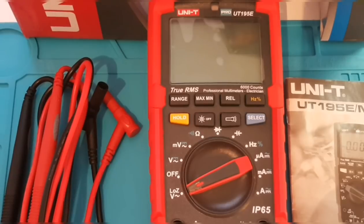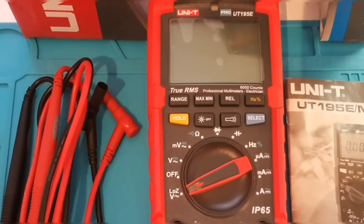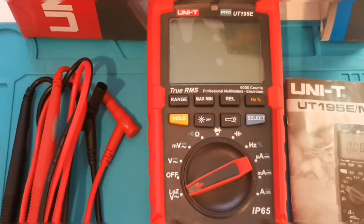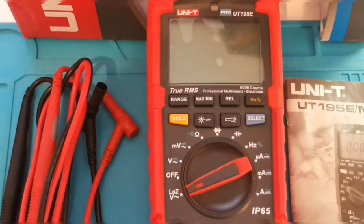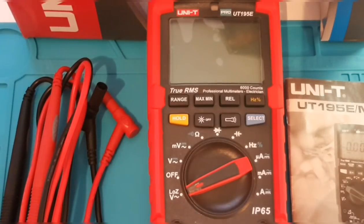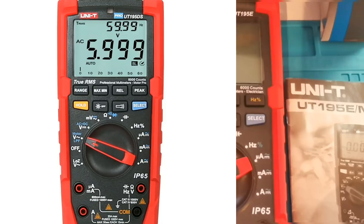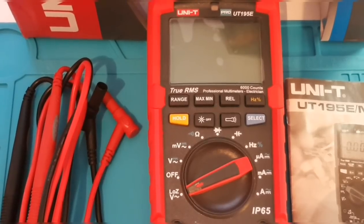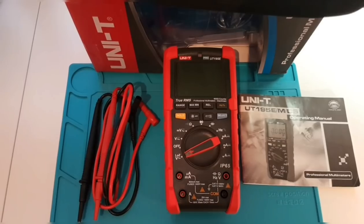There are three different varieties of the UT195 series. There's the UT195E, which we are looking at today, the UT195M, and the UT195DS. The DS has the dual display. That's the biggest difference. This is sort of the mid-range one in between.